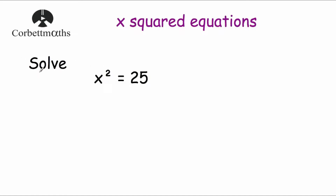Our first example says: solve x squared equals 25. Remember, whenever we're solving an equation we want to find what x equals — we want to find the value that x represents. So what number squared will equal 25? By looking at this you might automatically know that one of the solutions is equal to 5, because 5 squared is equal to 25.